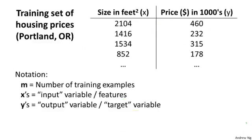More formally, in supervised learning, we have a dataset. And this dataset is called a training set. So for housing price, for example, we have a training set of different housing prices. And our job is to learn from this data how to predict the prices of the houses.